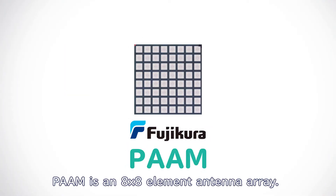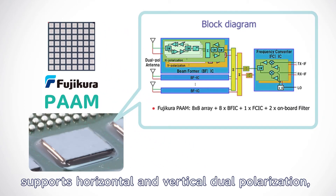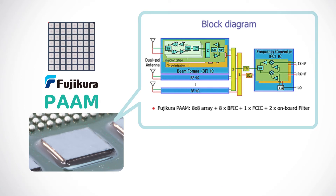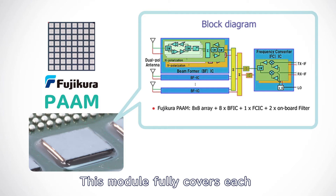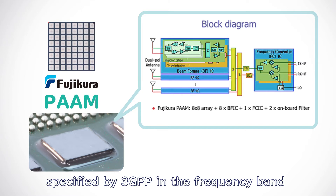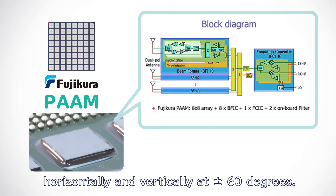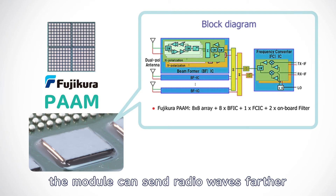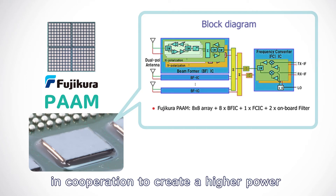Fujikura's POM is an 8x8 element antenna array. Each antenna element supports horizontal and vertical dual polarization, and is used for transmission and reception. Furthermore, POM controls the amplitude and phase of radio waves independently. This module fully covers each 5G NR band of N257, N258, N261 specified by 3GPP in the frequency band from 24 GHz to 30 GHz, and can steer the beam horizontally and vertically at plus or minus 60 degrees. Moreover, the module can send radio waves farther by arranging multiple modules and operating them in cooperation to create a higher power and sharper beam.